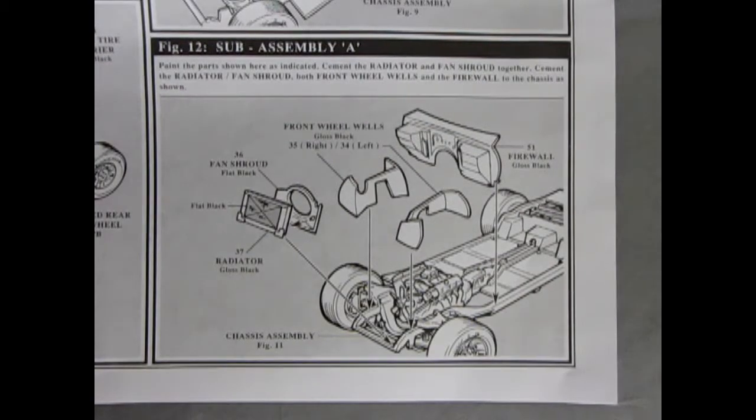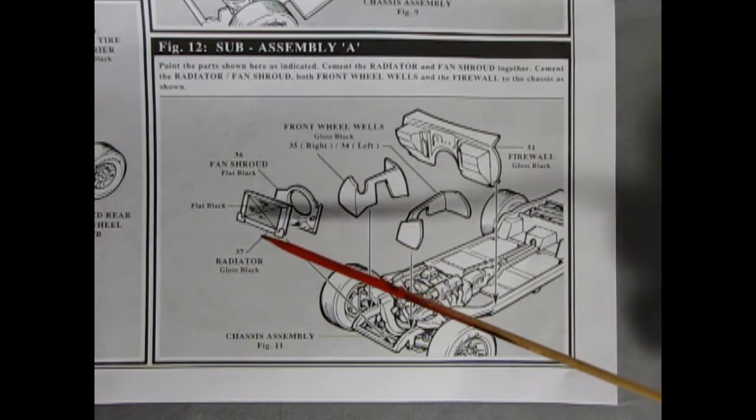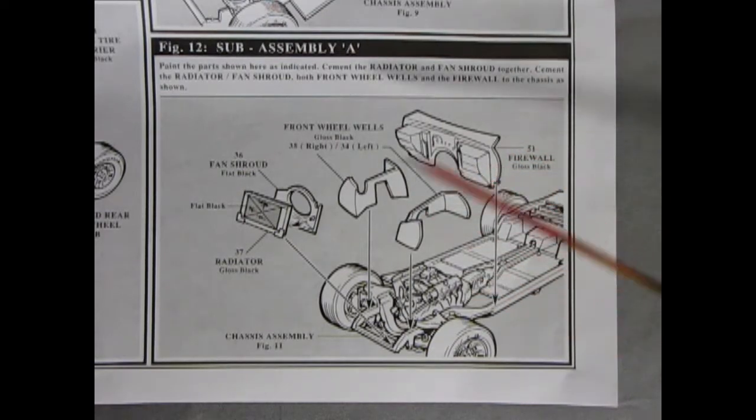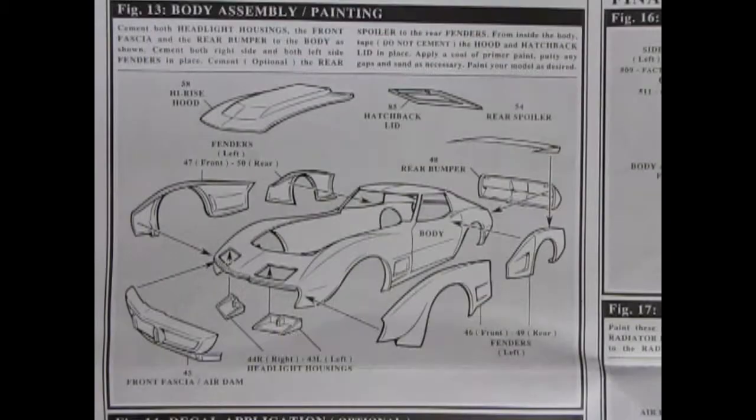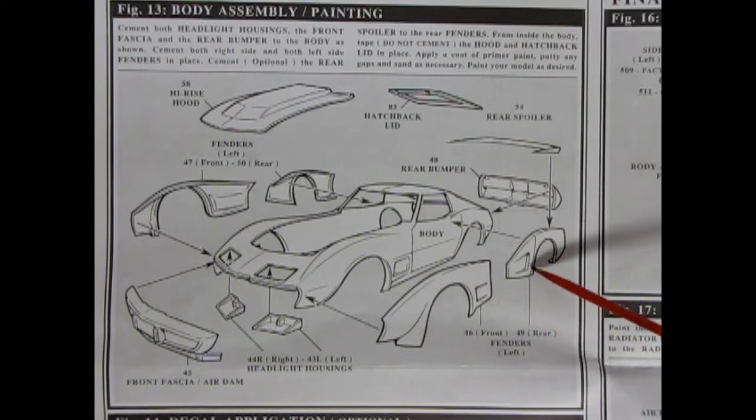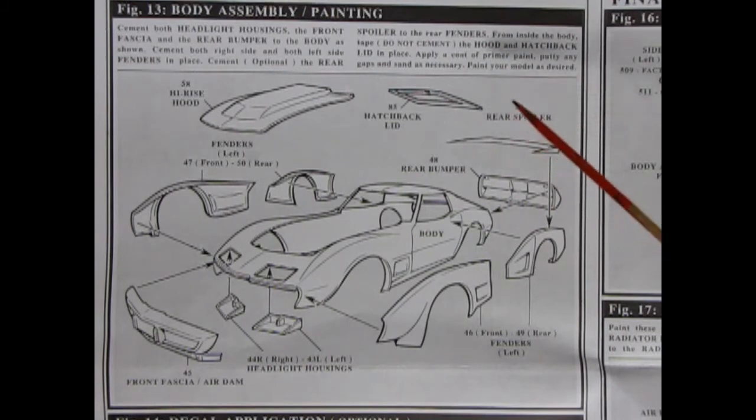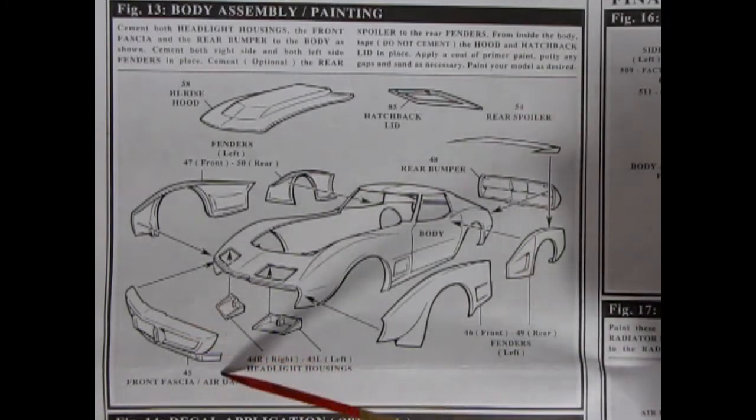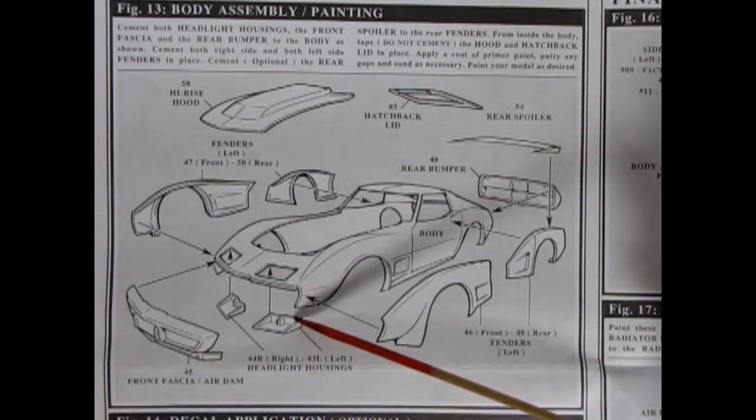In our next sub assembly we get into the under hood components which includes our radiator, our fan shroud, our inner wheel wells and our firewall, all being glued onto the chassis. We now carry on into our body assembly, and this is quite a conglomeration of all kinds of groovy custom components. Here we have our regular body inside, and then you can add on these fender flares front and back as well as our rear bumper, add in a rear spoiler, there is a hatchback lid, high-rise hood, front fascia, air dam and our headlight housings.